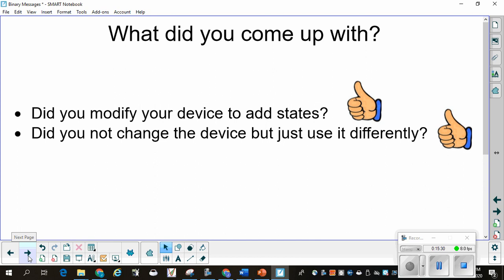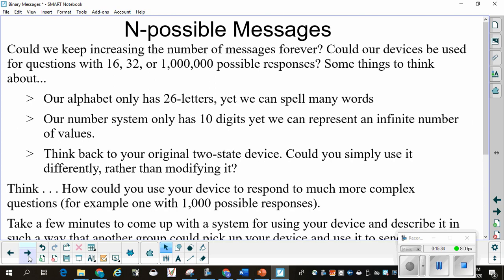Now, this is leading us to N, not M possible, but N possible messages, meaning any arbitrary number of messages. Could we keep increasing the number of messages forever? Could our devices be used for questions with 16, 32, or a million possible responses? Some things to think about. Our alphabet only has 26 letters that we can spell many, many words. Our number system only has 10 digits, 0 through 9, and yet we can represent an infinite number of values. Think back to your original two-state device. Could you simply use it differently rather than modifying it? Think. How could you use your device to respond to much more complex questions, for example, one with a thousand possible responses?